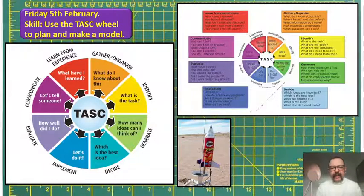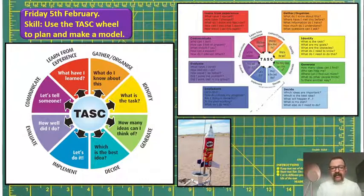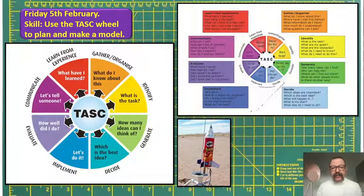So that's what you're going to do today. Do your own little subheading: 'What do I know about this?' You could colour it in, do it in orange felt tip — it's entirely up to you. But do use the wheel, each step of the wheel. So we've talked about the task.